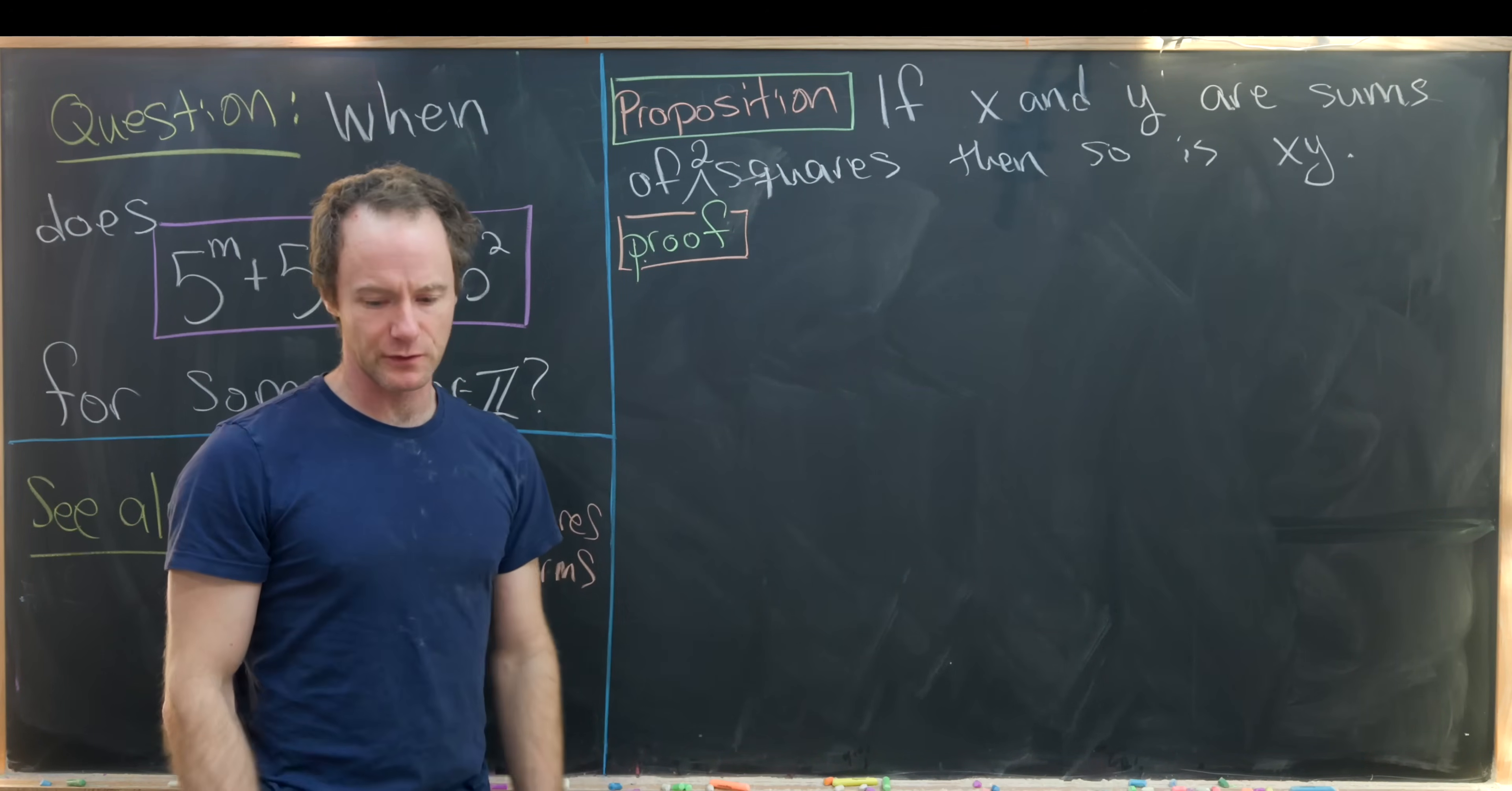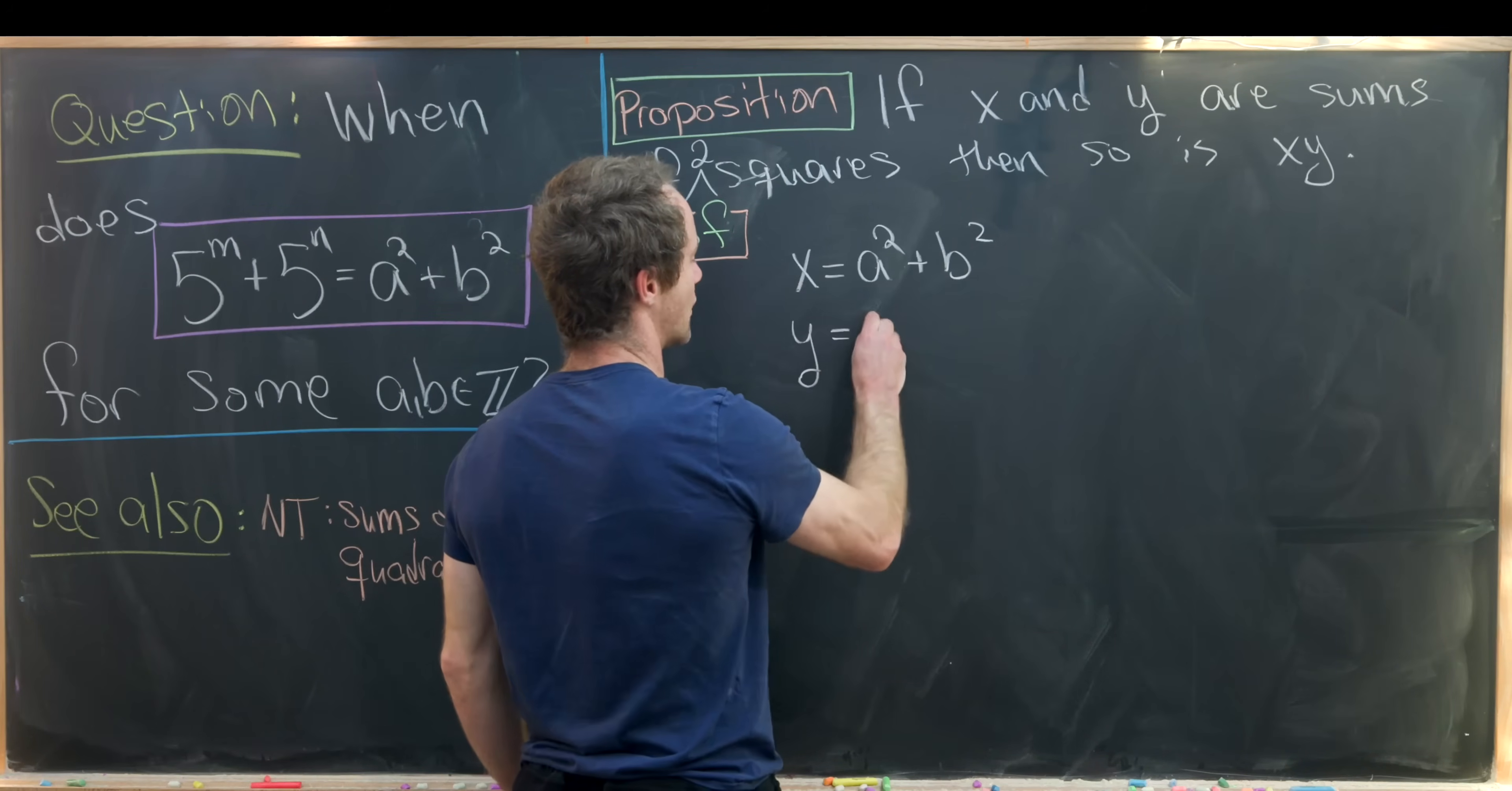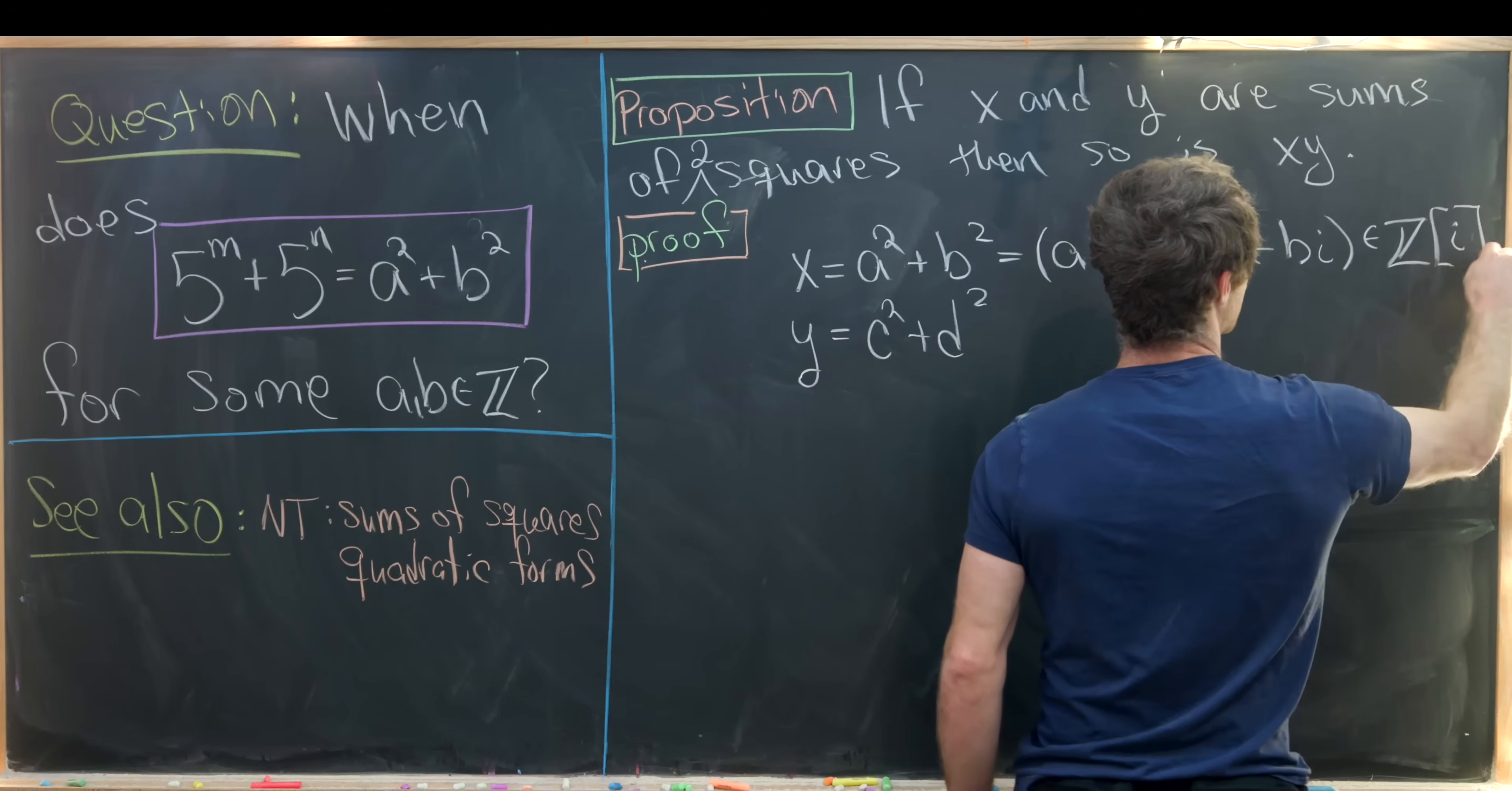There are a couple different proofs of this. One arrives at it with a wild guess, but I like doing a proof that involves the Gaussian integers, which is like a complex version of the integers. So let's take x to be equal to a squared plus b squared, and then furthermore we'll take y to be c squared plus d squared. We'll factor this over the Gaussian integers, so this factors as a plus bi times a minus bi, and that's occurring in this object Z adjoin i.